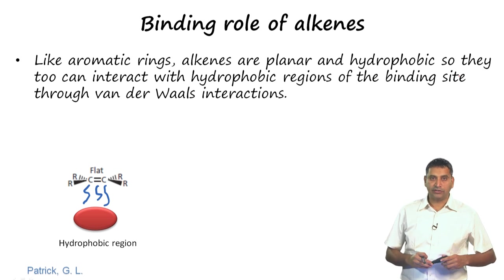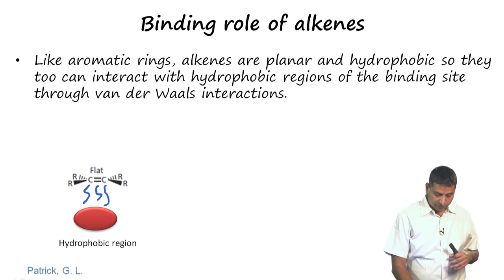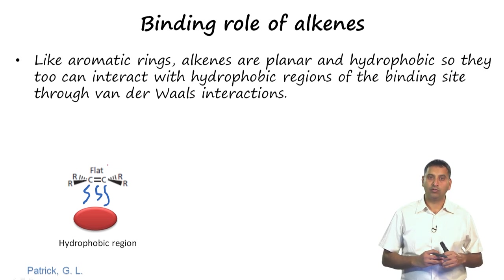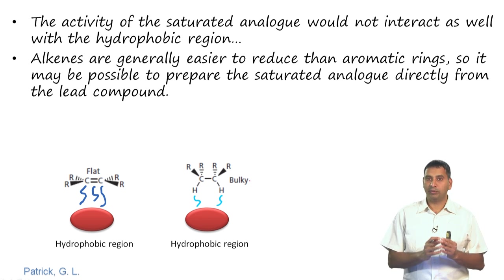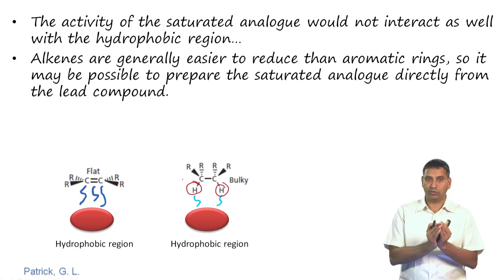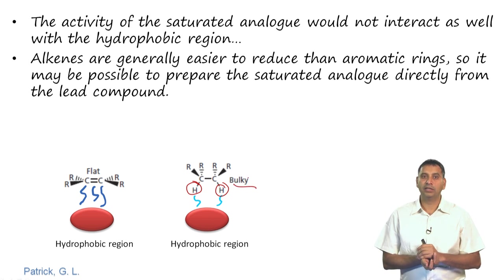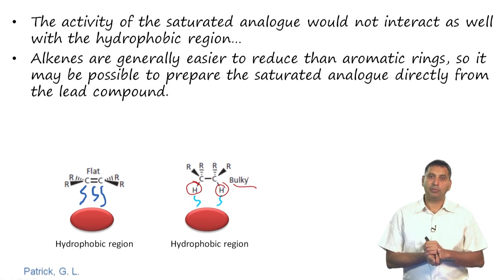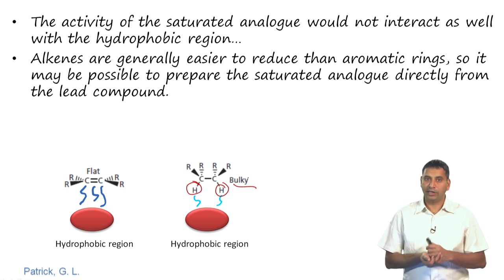Alkenes, like aromatic rings, are planar and hydrophobic, so they can be involved in hydrophobic or Van der Waals interactions. The activity of the saturated analogue would not be as strong — replacing the pi bond with two CH groups reduces the interaction quality and the rest of the molecule does not interact as well due to steric bulk. Alkenes are easier to reduce than aromatic rings, so it may be possible to prepare the saturated analogue directly from the lead compound.